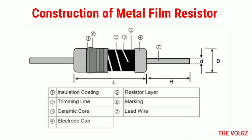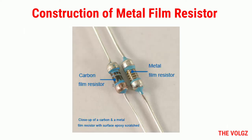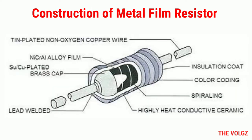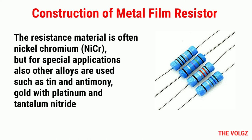Construction of metal film resistor. The resistive element is a thin metal layer that is usually sputtered on a cylindrical high purity ceramic core. The deposited metal is artificially aged by keeping it for a long period at a low temperature. This results in better accuracy of the resistor. The resistance material is often nickel chromium (NiCr).